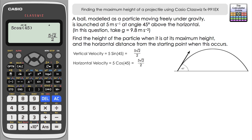Let's form equations both horizontally and vertically for the motion of this ball, using the equation of motion s = ut + ½at². For the horizontal: the horizontal distance equals the horizontal component of velocity — 5 square root 2 over 2 — multiplied by time t. Since we're modelling the ball as a particle, we ignore air resistance, meaning horizontal acceleration is zero. So the horizontal equation simplifies to s = (5√2/2)t.